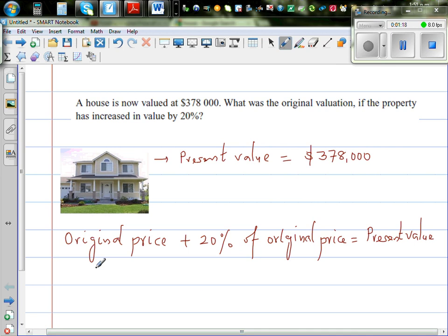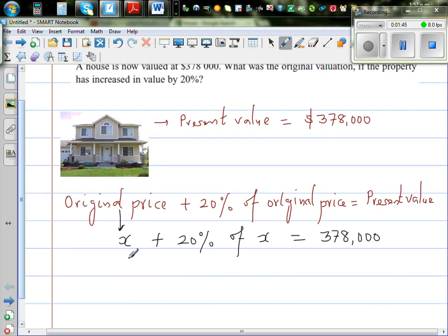So let's let the original price be x. So it'll be x plus 20% of x. 20% of x is equal to 378,000. This is nothing but x plus 20% as a decimal is 0.2 times x is equal to 378,000. So you don't need to remember any formulas if you go through this thinking process.